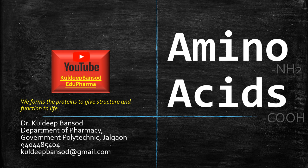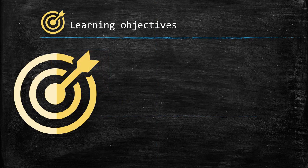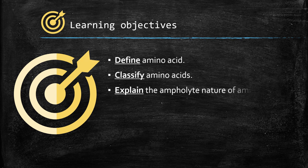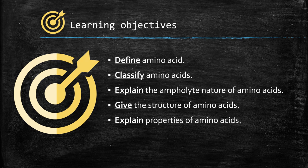Let's see what are the learning objectives. After going through this video lecture, you will be able to define amino acids, classify them, explain the special characteristics of amino acid i.e. amphoteric nature, give the structure of amino acids and explain their properties. Let's see them one by one.